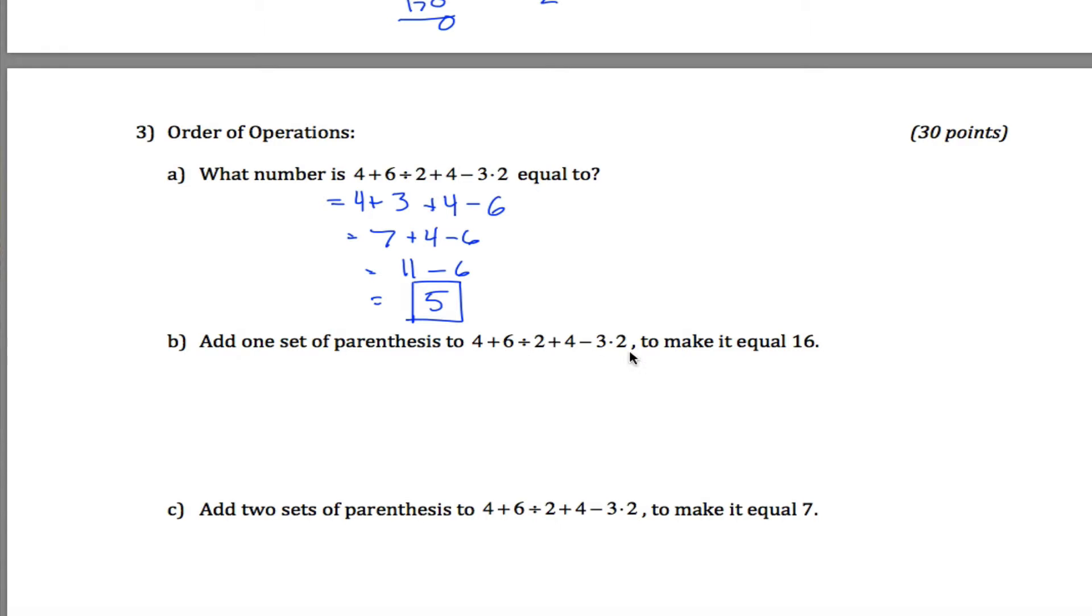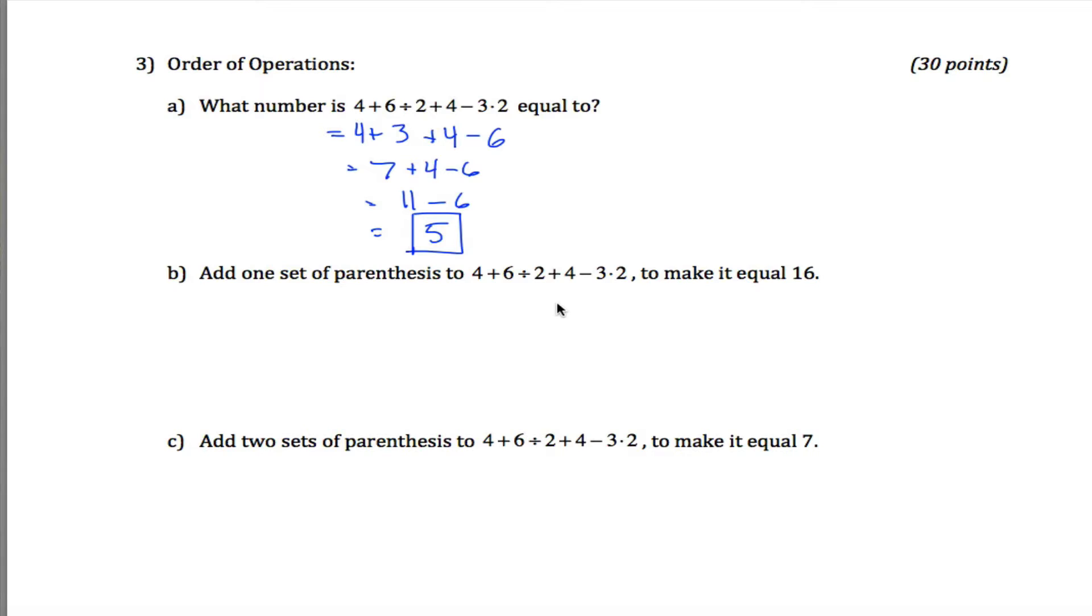And now it's saying add one set of parentheses to make this thing equal to 16. 16 is quite a bit bigger than 5. I'm going to make this number a lot bigger. Maybe if I can multiply a whole bunch of stuff here. So what would happen if I threw the parentheses here? Well, I would still say do the division first. And so I would get 4 plus 3 plus 4 minus 3, and that whole thing times 2. And 4 plus 3 is 7, plus 4 is 11, minus 3 is 8. So this is 8 times 2, which is exactly 16. So I think throwing the parentheses in that spot will make this thing equal to 16.